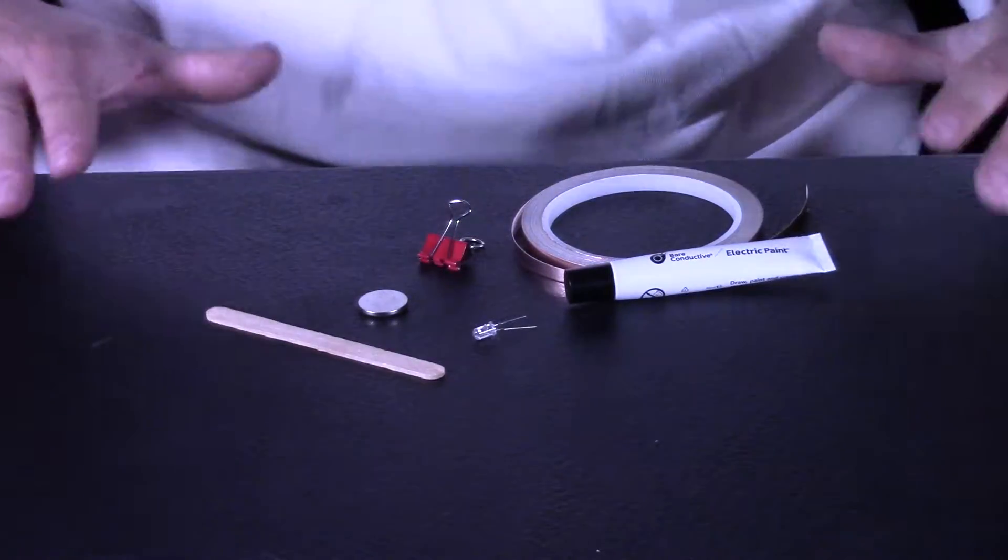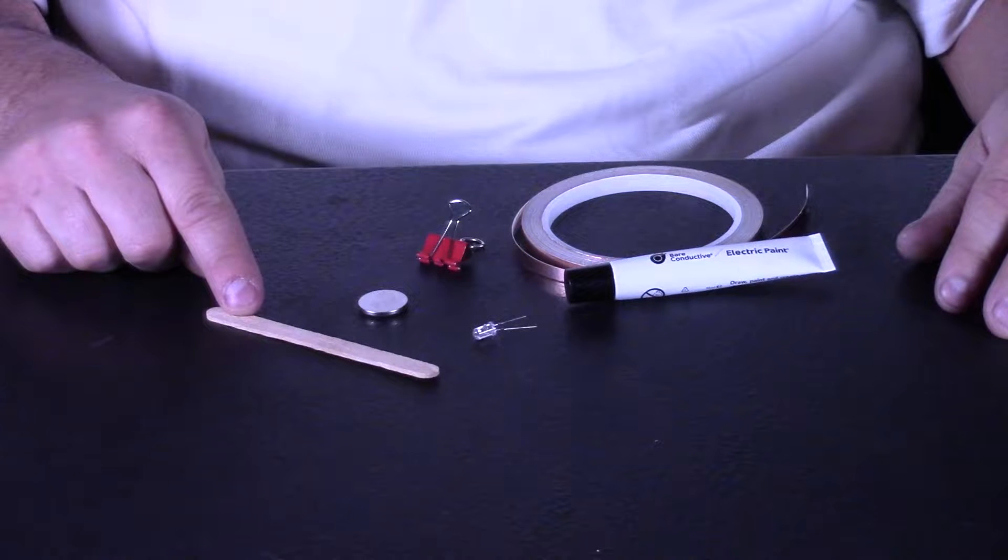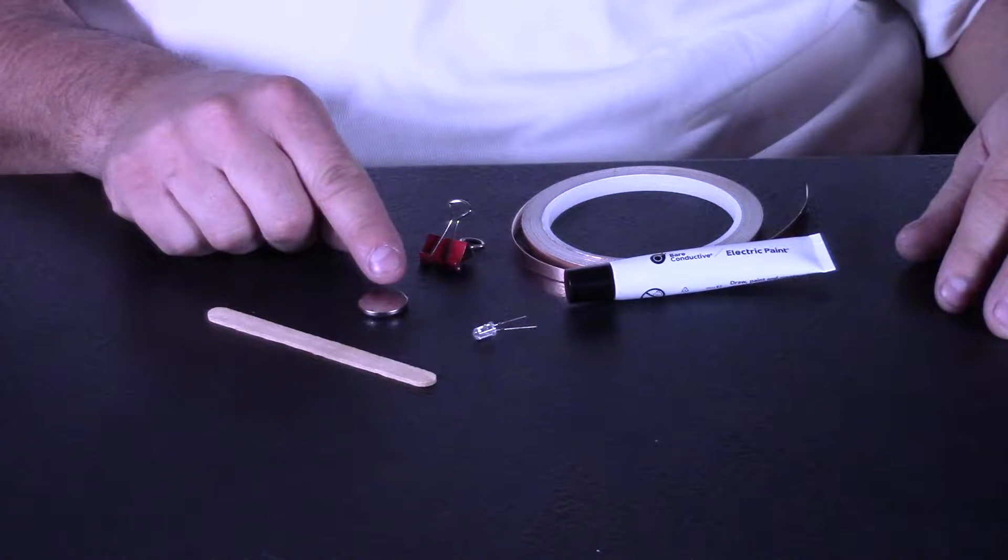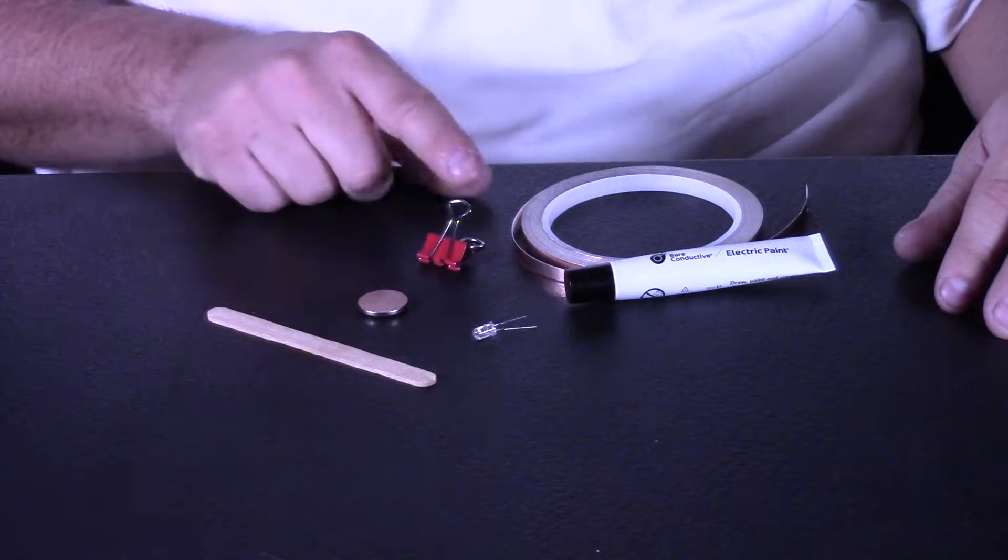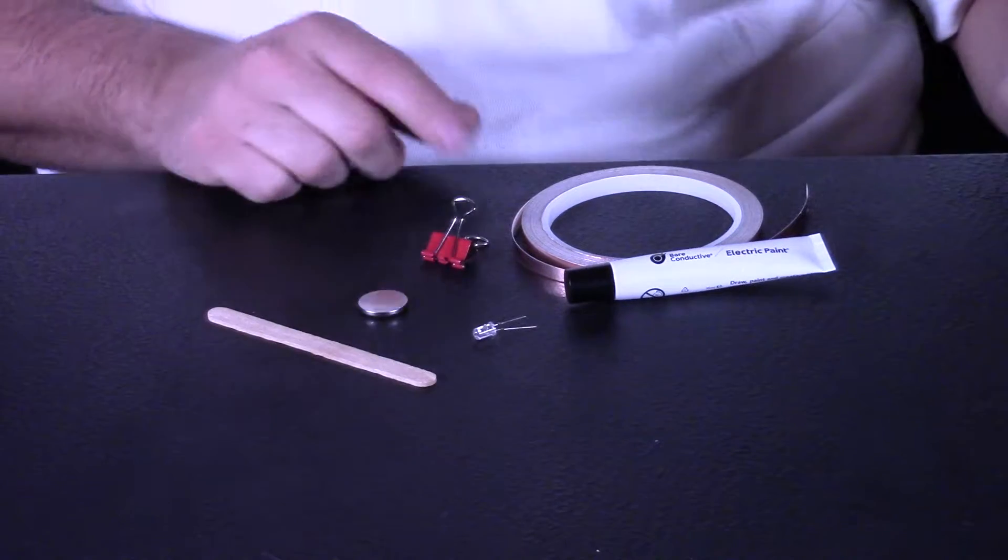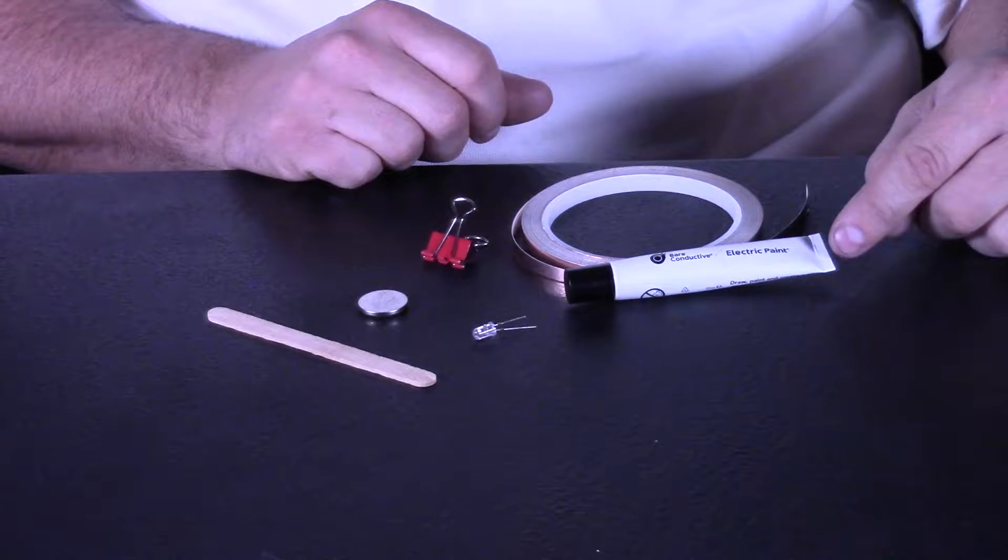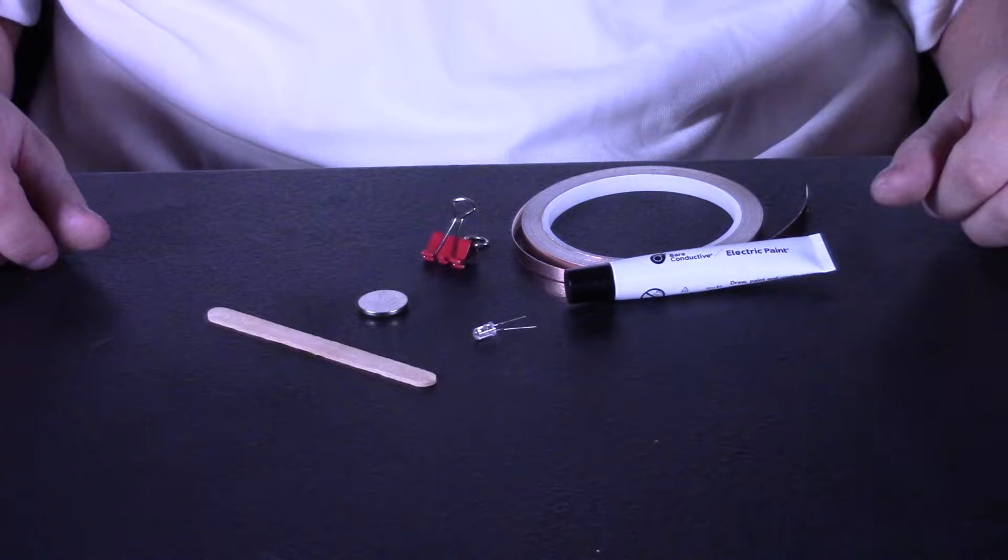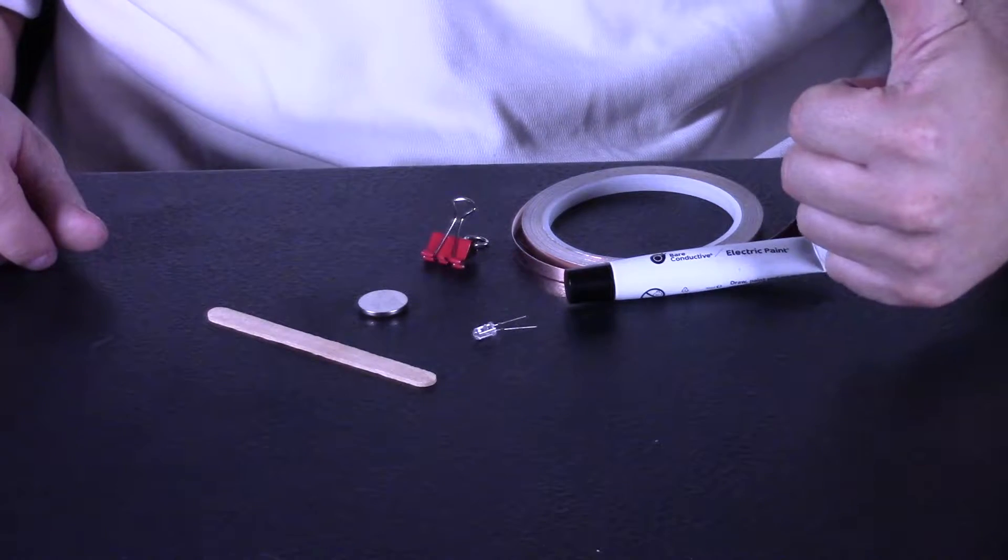We've zoomed in so you can take a closer look at what you're going to need. You're going to need a popsicle stick, a battery, an LED light, a binder clip, and you can choose to use copper tape or electric paint. We got this paint from our friends at Educational Innovation, so big thumbs up to them.